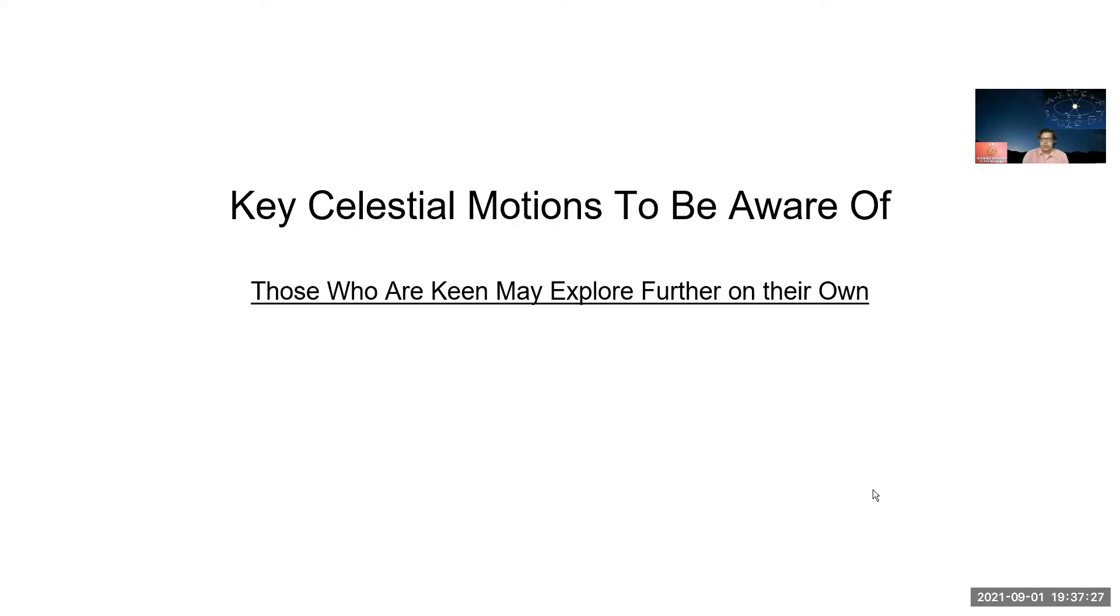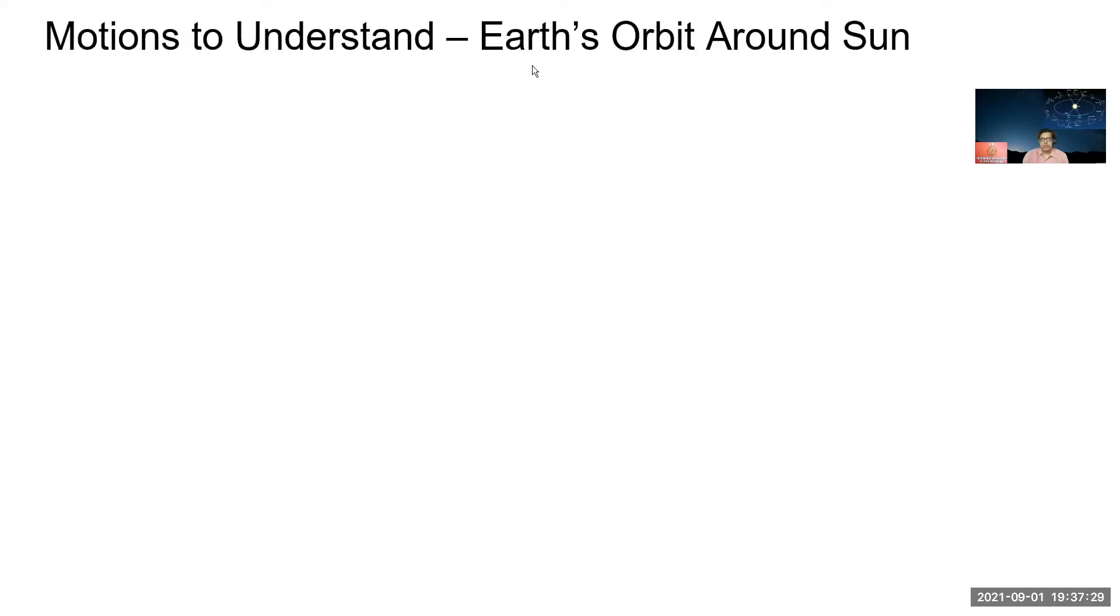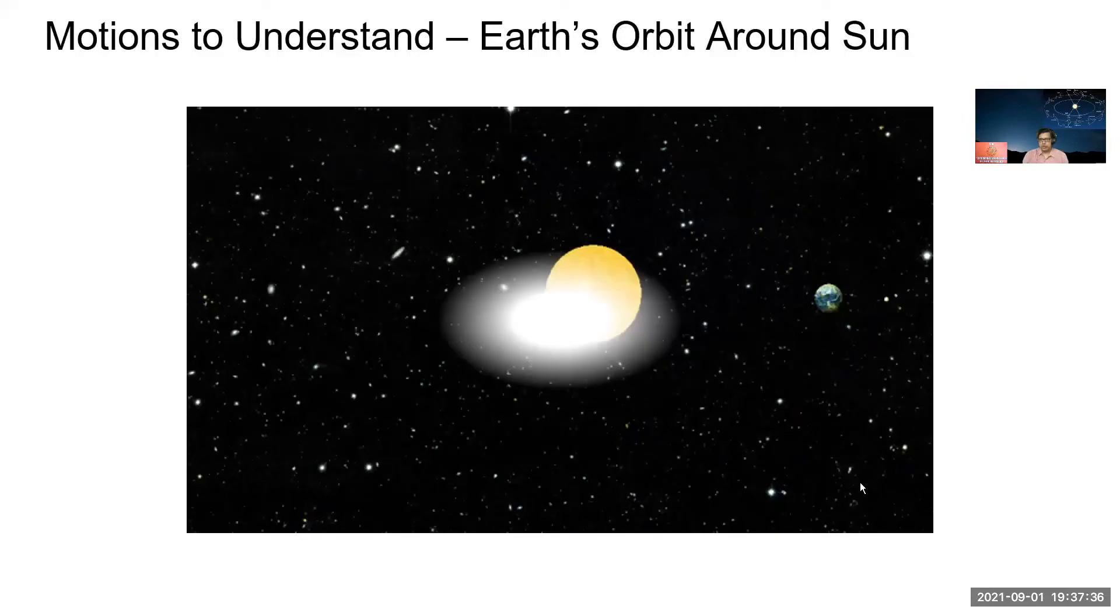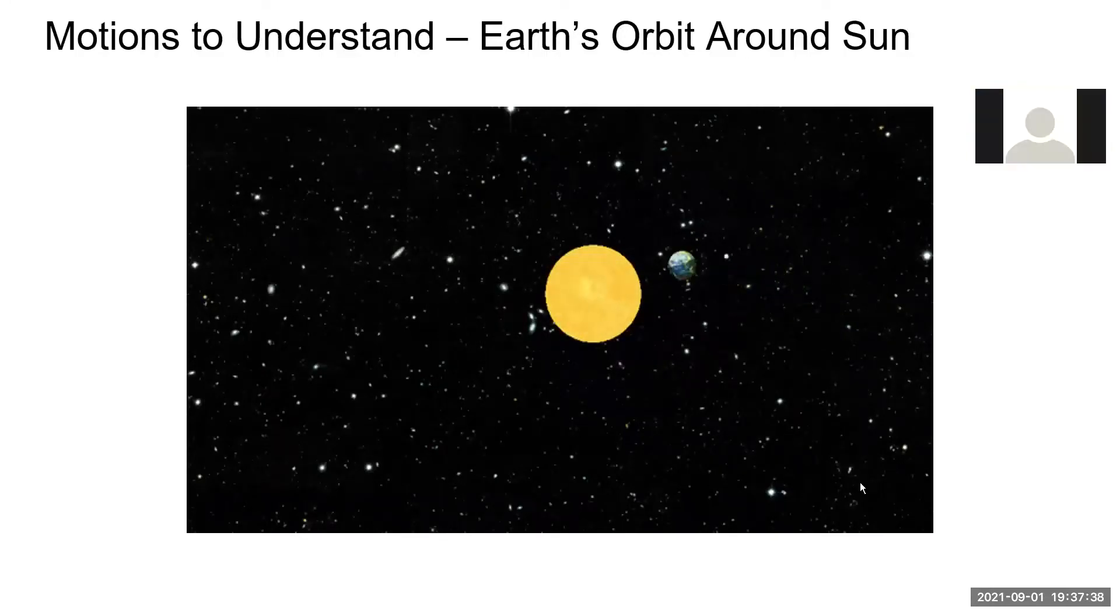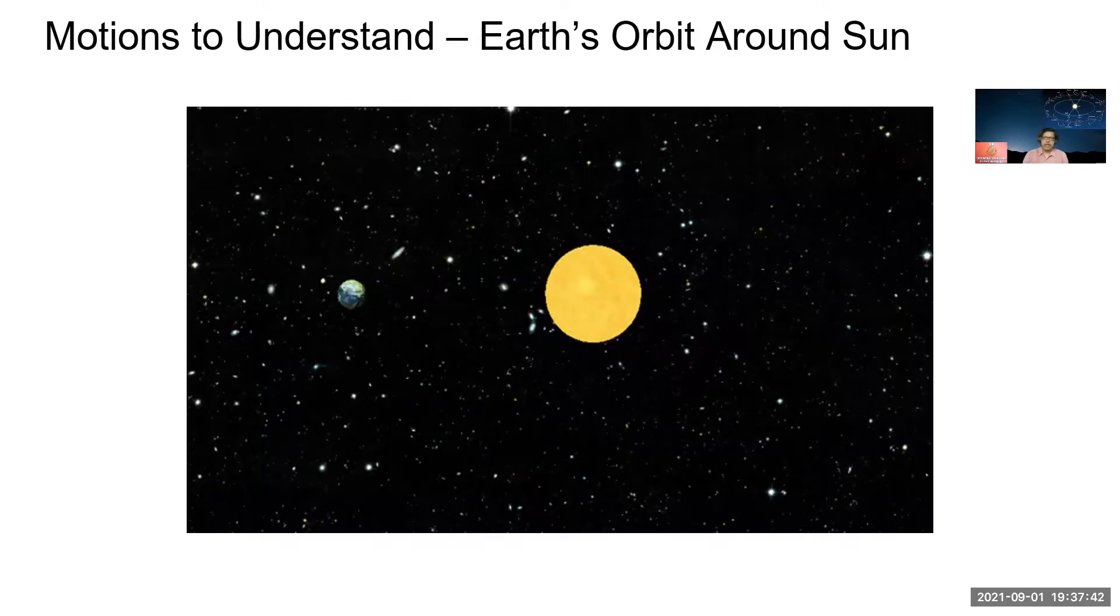So first is Earth's orbit around the sun that everyone knows. This is a GIF image representing that. The small white dot is the moon, and in case you are not aware, the sun also rotates. If I remember right, it rotates one rotation takes about one month.